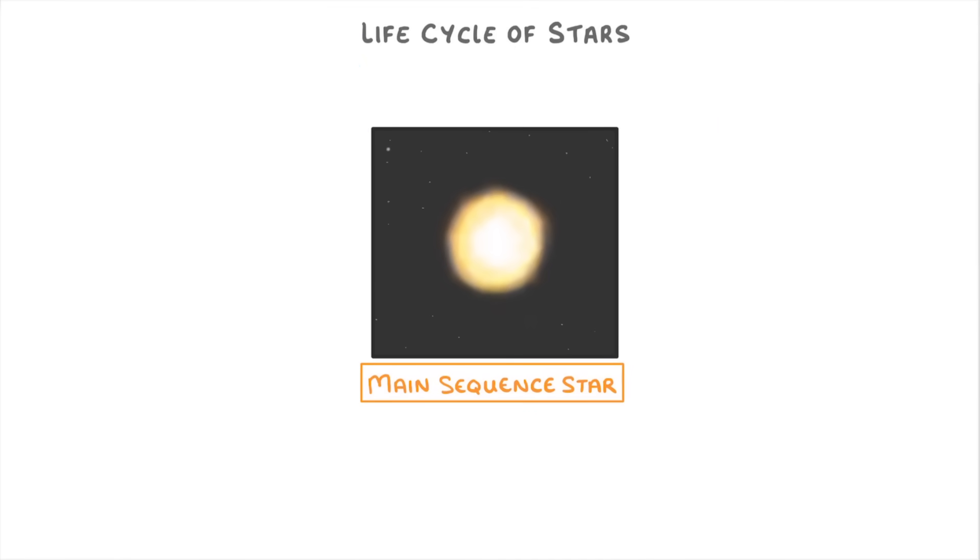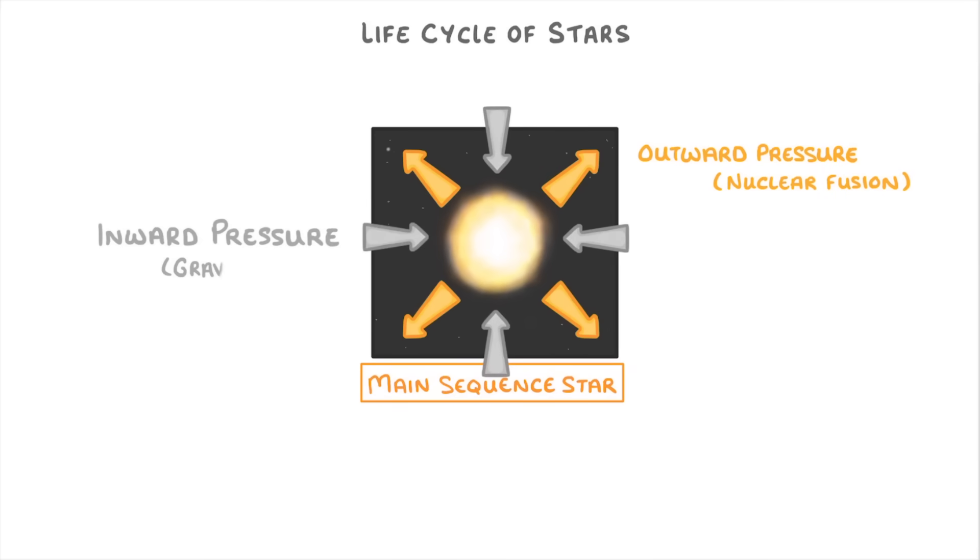While it's a main sequence star, the outward pressure, caused by all of that energy that's being released by nuclear fusion, is perfectly balanced by the inward pressure caused by gravity. This allows for a long stable period that can last for billions of years. And it's this stage that our sun is currently in.